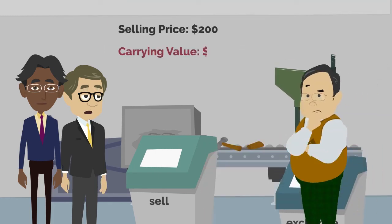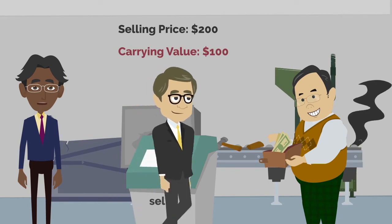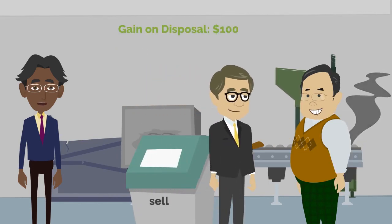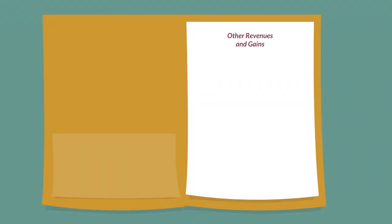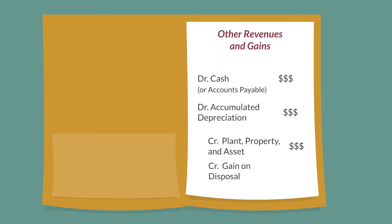If a company sells the asset for more than its book value at time of sale, the company makes a gain on disposal. A gain on disposal is recorded in the other revenues and gains section of the income statement, and is much like the revenue account, which also has a credit normal balance.